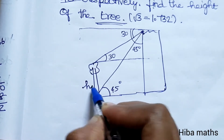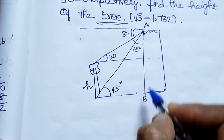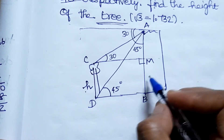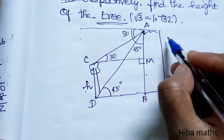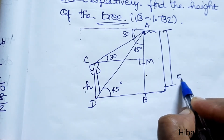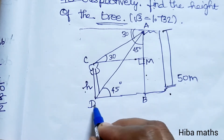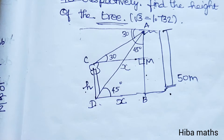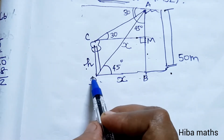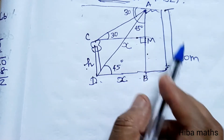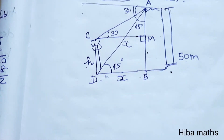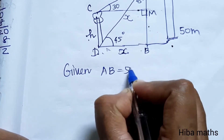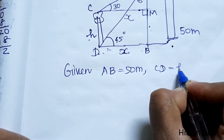The height of the tree is H. Points A, B are labeled with angle 90 degrees at B, and C is the height. The tower is 50 meters. The distance DB has value X. So DB value is X, and CM value is also X. The tower AB has value 50 meters, and CD is the height we need to find.